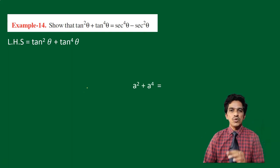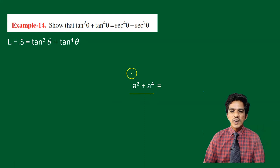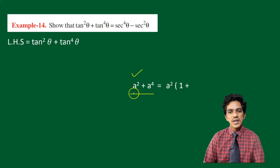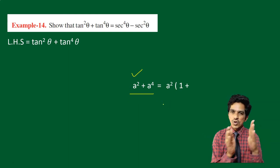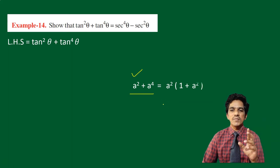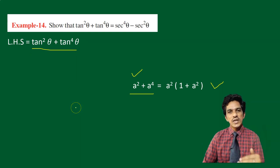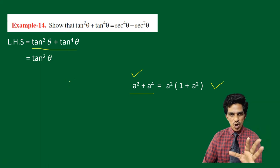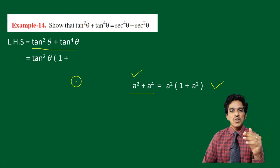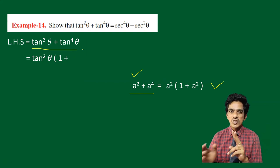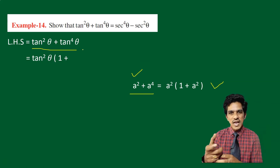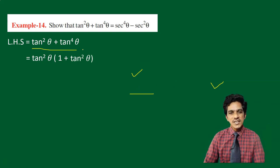The left side, tan square theta plus tan power 4 theta, is like a square plus a power 4. We can factorize by taking out tan square theta as a common factor. So tan square theta is common, giving tan square theta into 1 plus tan square theta. Just as a power 4 divided by a square gives a square, tan power 4 theta divided by tan square theta gives tan square theta as the second factor.